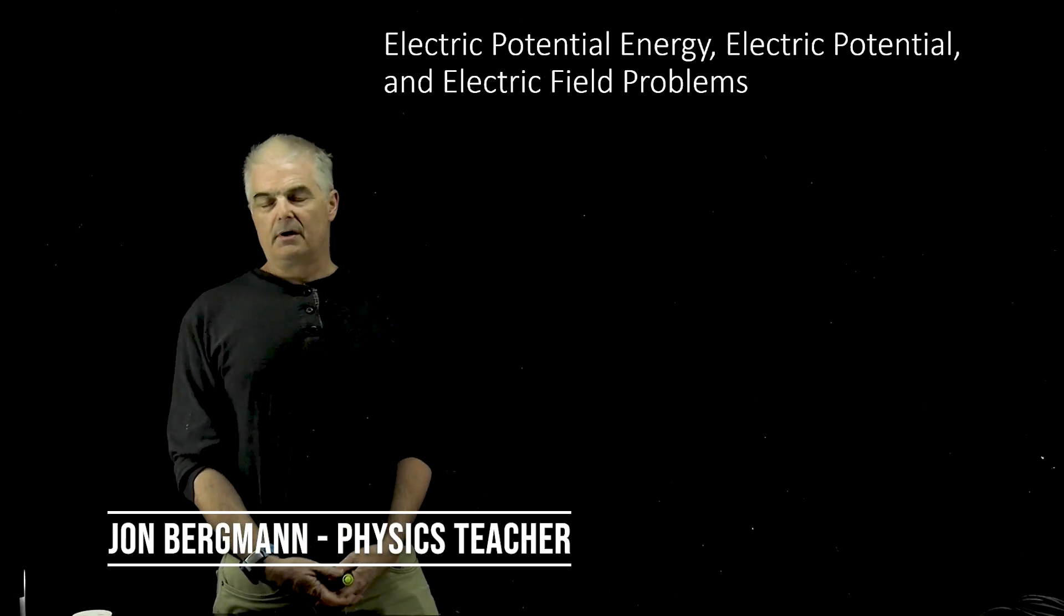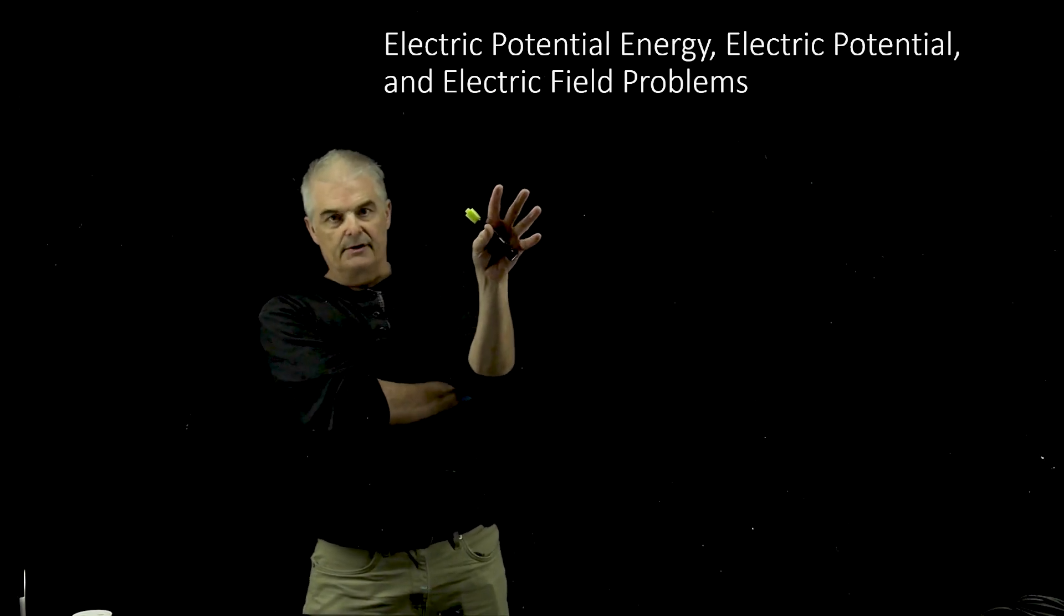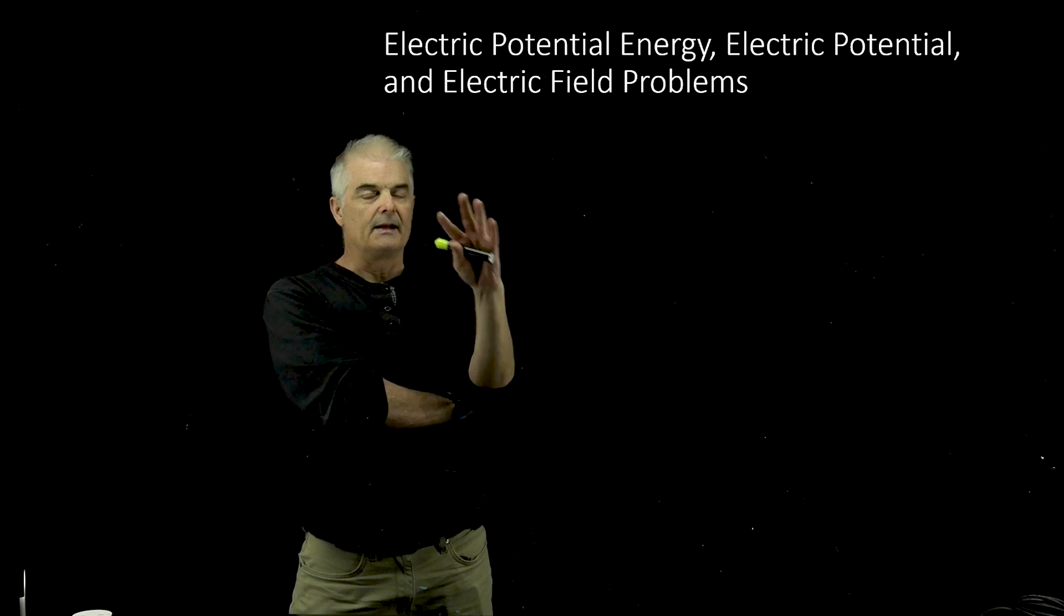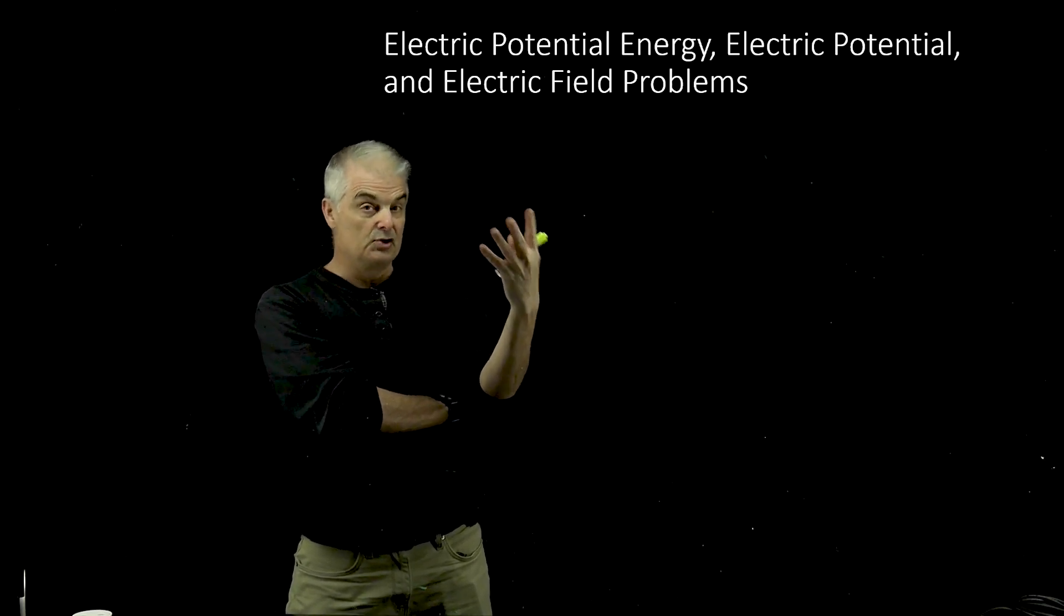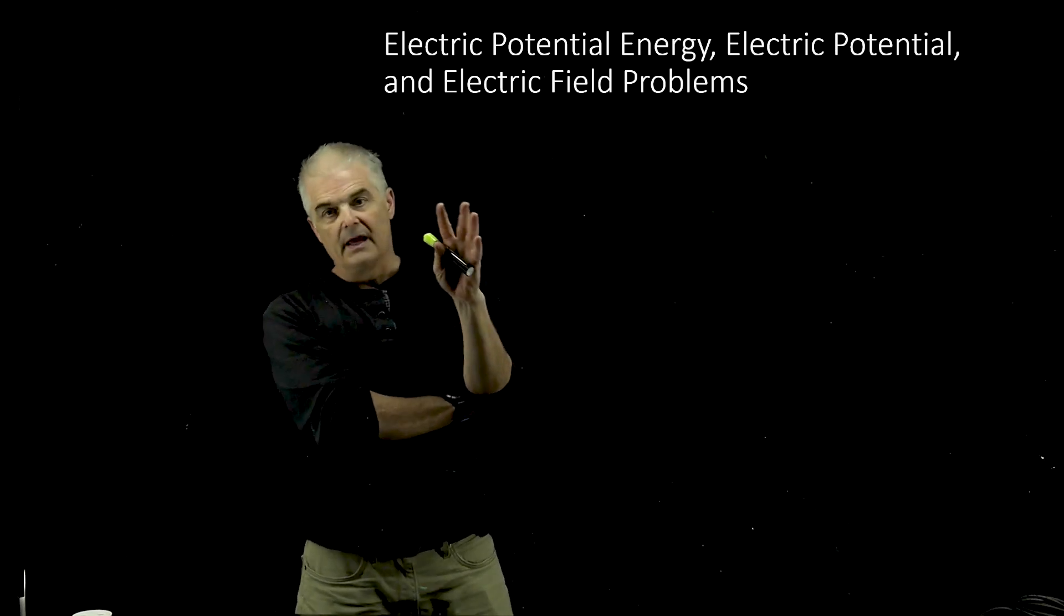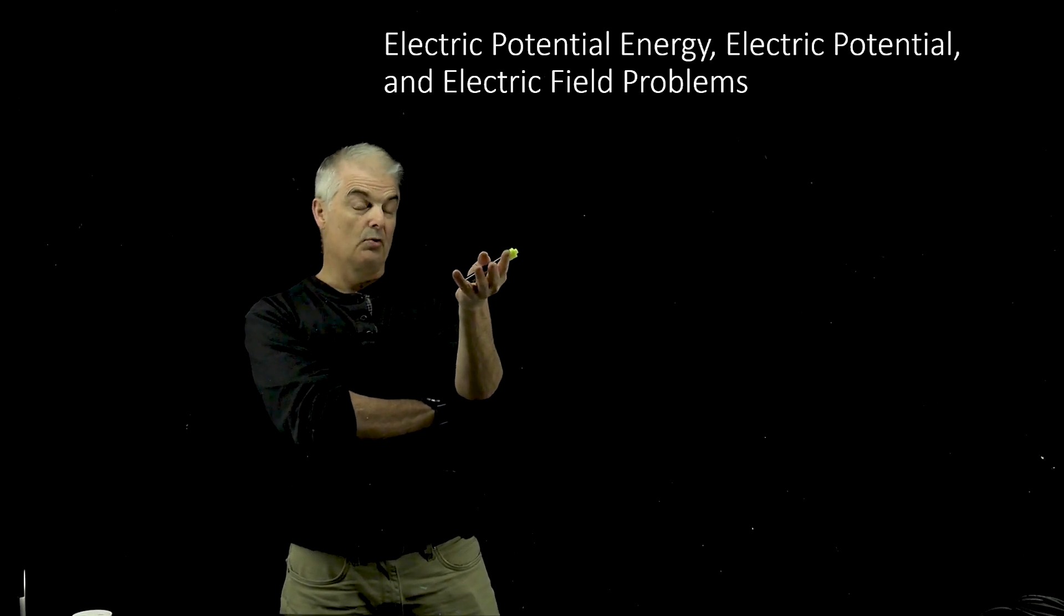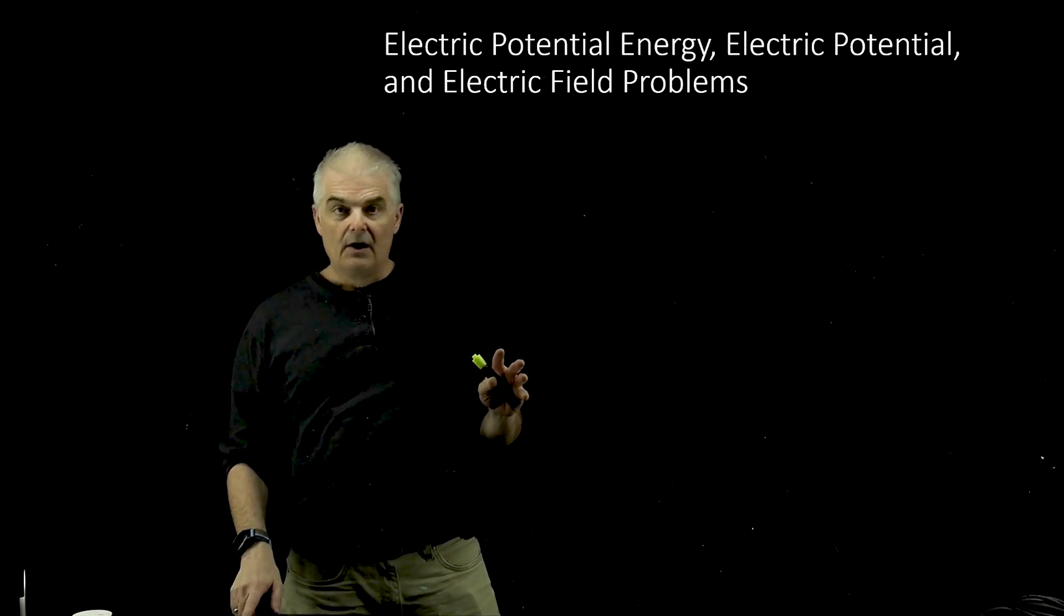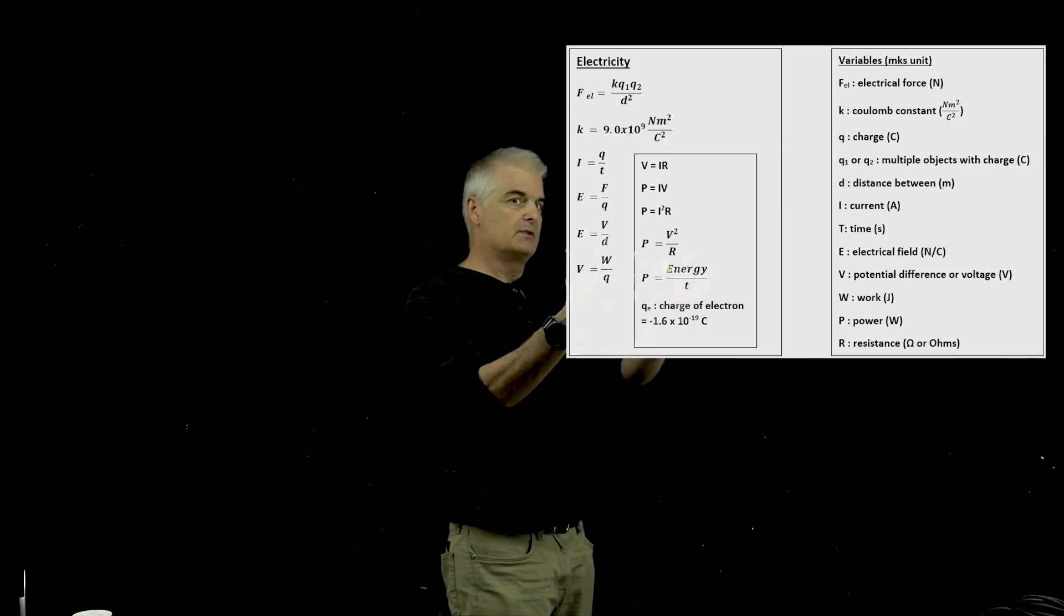Today we're going to talk about the mathy part of this conversation we've been having about electric potential energy, electric potential, and electric field problems. Remember, electric potential energy measures energy, that's measured in joules. Electric potential measures things in volts. And electric field is a Newton per coulomb. So we've got these units, and ultimately there's a chart of all the different equations that you can see right here.